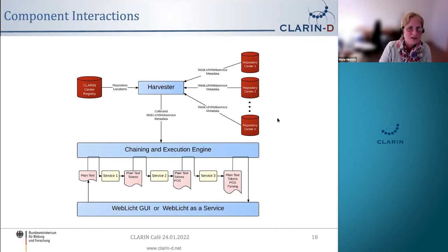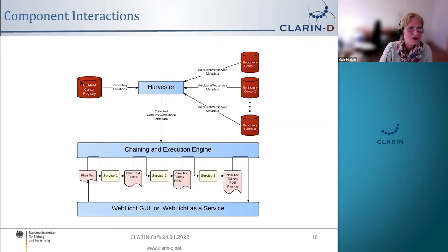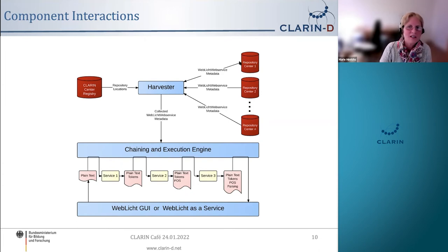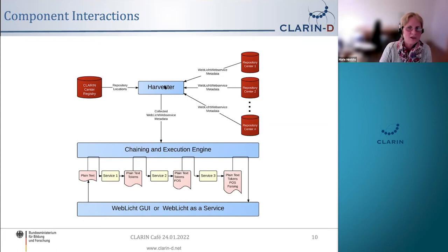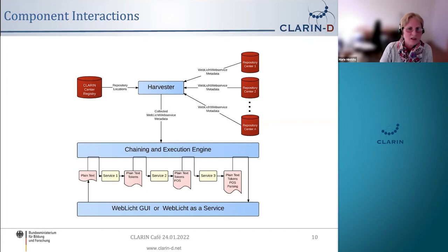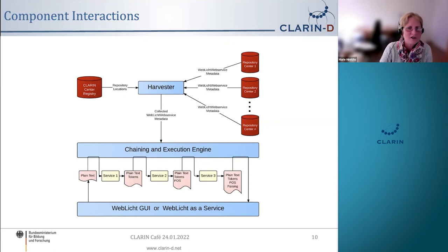Here's a picture of how the components fit together. We start at the CLARIN center registry, which holds information about all the repository locations. The harvester queries all of the repositories on a regular basis — every couple of hours — and the WebLicht web service metadata is queried from all the centers. That then gets passed into the chaining and execution engine, which is responsible for making sure that the processing chains are valid and in the right order.